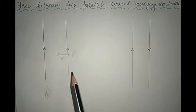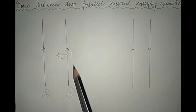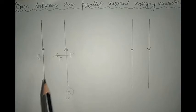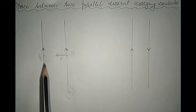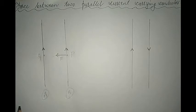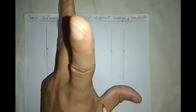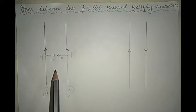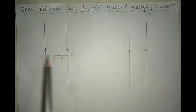Now let us change the scenario by considering that wire B is present but wire A is not. Since current through wire B flows in the upward direction, the direction of the magnetic field generated due to wire B at point Q, according to the right-hand thumb rule, is coming out of the plane of the paper. Placing conductor A carrying current upward in this magnetic field, the thumb gives the direction of the force as directed towards wire B. Therefore, two wires carrying current in the same direction experience a force towards each other — they attract each other.